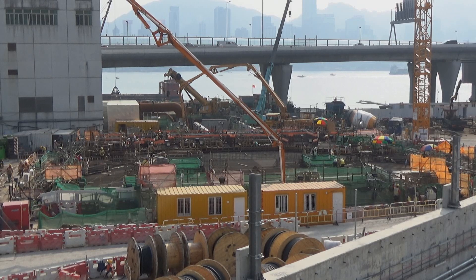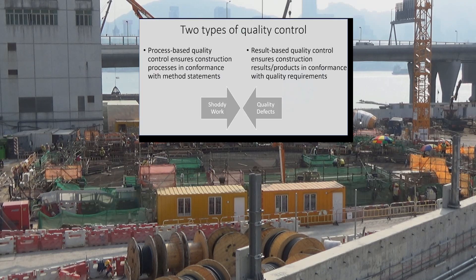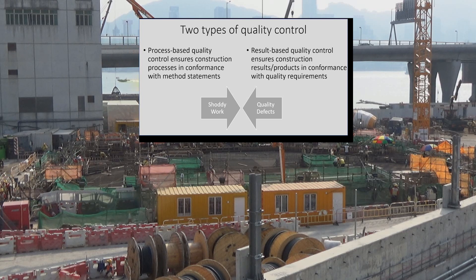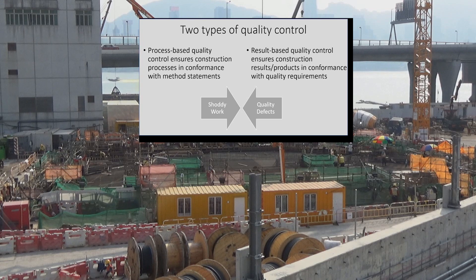Construction activities are discontinuous, dispersed, diverse, and distinct. These characteristics can easily overwhelm quality inspectors when they need to pay daily visits to multiple sites. As a result, quality records are often inappropriate, and quality management appears to be post-event remedies.